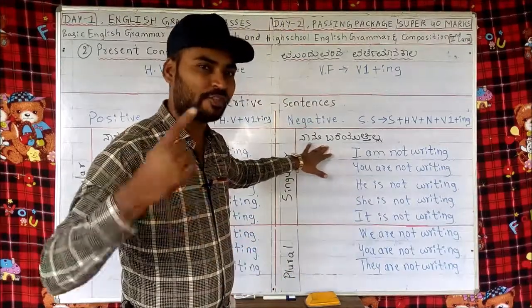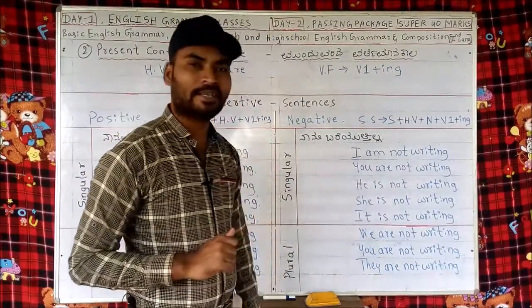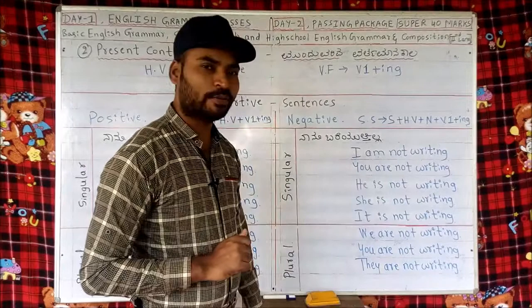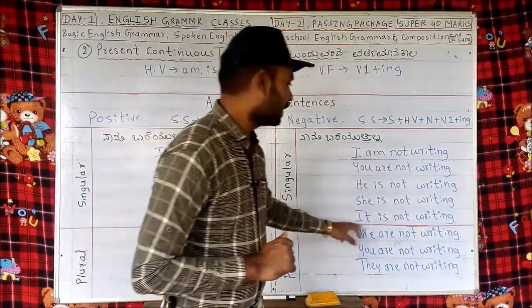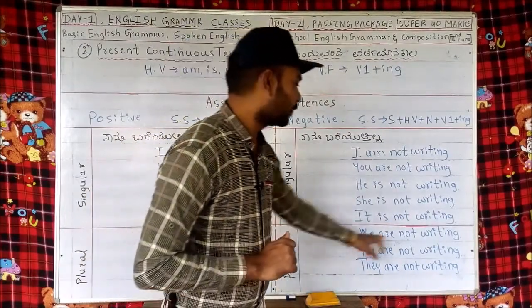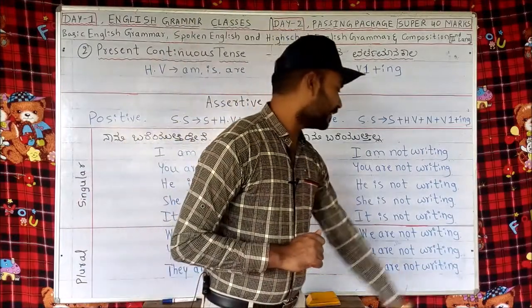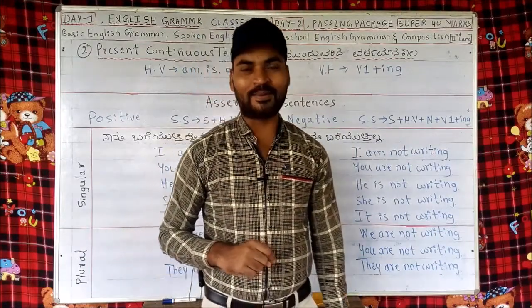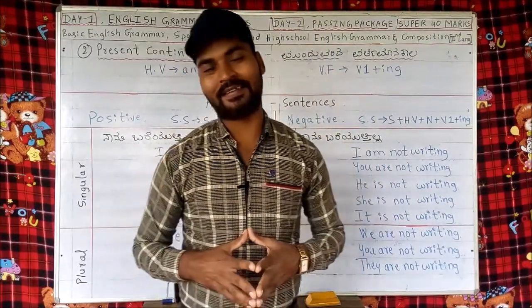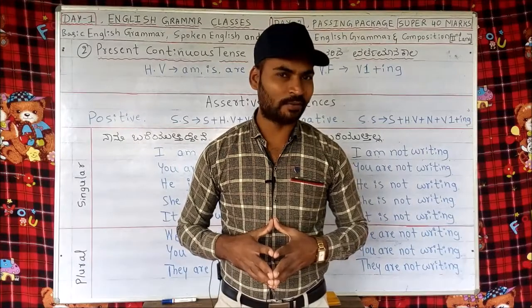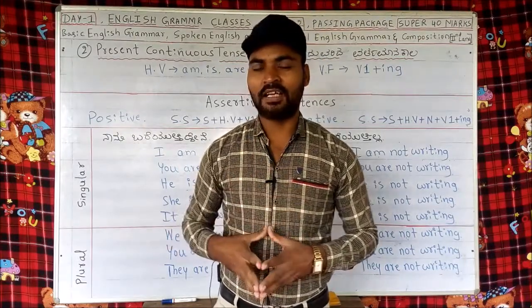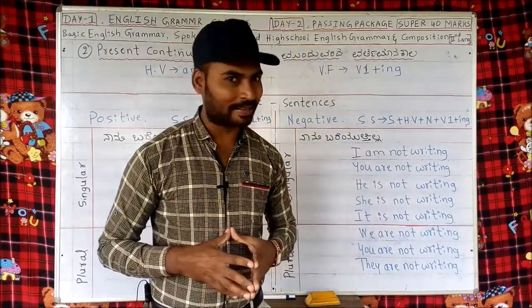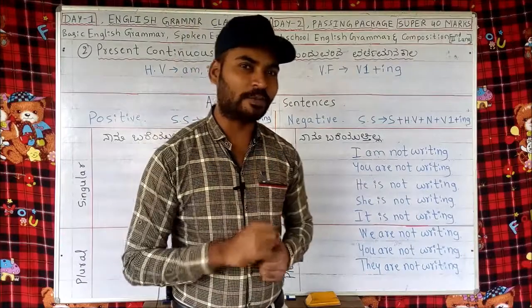I am not writing — Naanu Baryuti Illa. It is not writing — Adu Baryuti Illa. We are not writing — Naamu Baryuti Illa. You are not writing — Neevu Baryuti Illa. They are not writing — Avaru Baryuti Illa. Now let's take another verb as an example — 'read'. I am not reading. You are not reading. He is not reading. She is not reading. It is not reading. We are not reading. You are not reading.